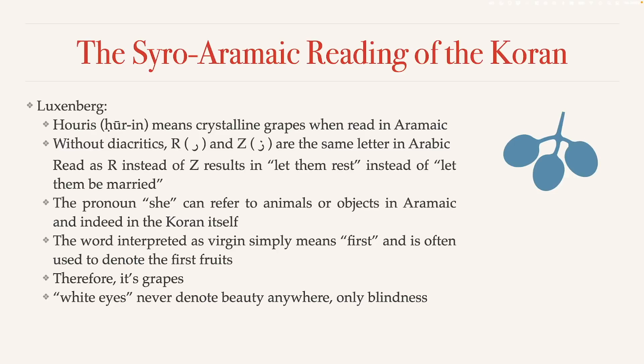The first fruits were an important concept in those days when people were dependent on food production. In pagan times they were offered as sacrifices to the gods, and even afterwards they were significant. When you look at dictionaries, word definitions are given in order of frequency. The word interpreted as 'virgins' most commonly means 'first,' then 'firstborn,' then 'first fruits' in third position — and 'virgin' comes only quite a bit later. So 'virgin' is a rare definition, and it's always likelier that a more common definition is used.